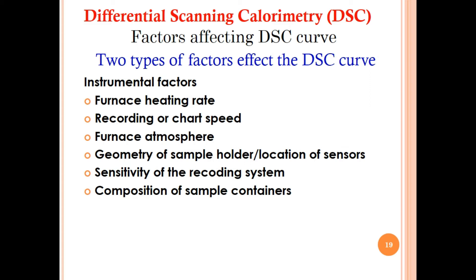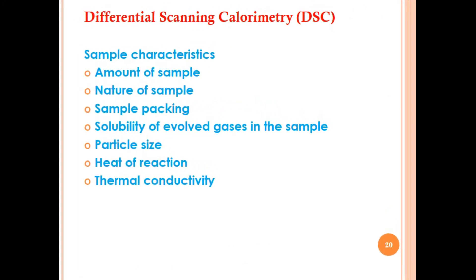We already discussed which type of container must be used — ones that are unreactive with the sample under investigation. The second type consists of sample characteristics, which also affect the DSC curve: amount of sample, nature of sample, sample packing, solubility of evolved gases in the sample, particle size, heat of reaction, and thermal conductivity.